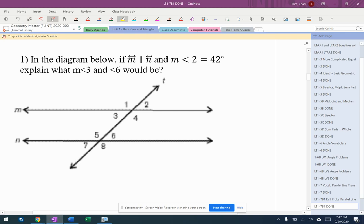All right, so we'll start off with something hopefully kind of easy. Angle 2 is 42. It says explain what angle 3 and angle 6 would be.